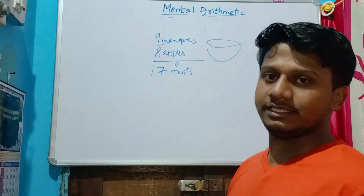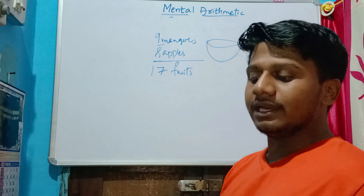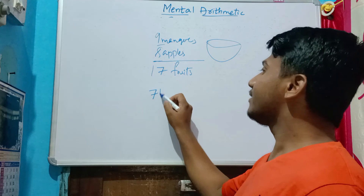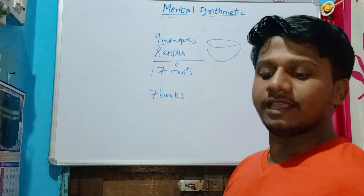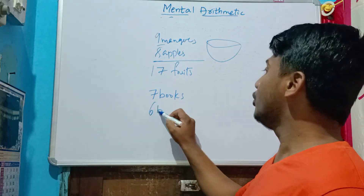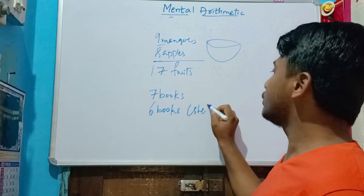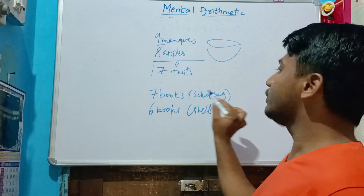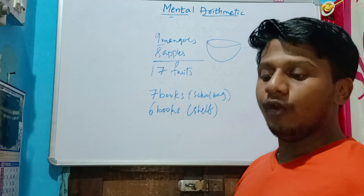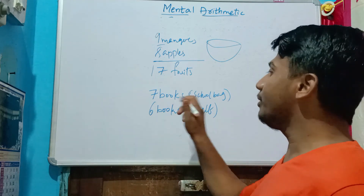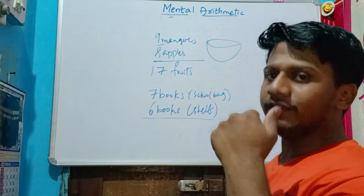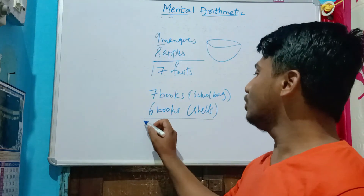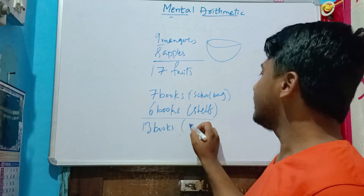Second question: Raju has seven books in his school bag and six books on the shelf. How many books are there altogether? After seven: eight, nine, ten, eleven, twelve, thirteen. So totally there are thirteen books altogether.